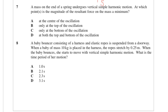A mass on the end of a spring undergoes vertical simple harmonic motion. At which point or points is the magnitude of the resultant force on the mass a minimum? The resultant force will be the point where acceleration is zero, and in SHM acceleration is directly proportional to displacement, so it will be at zero displacement, which is at the centre of the oscillation.